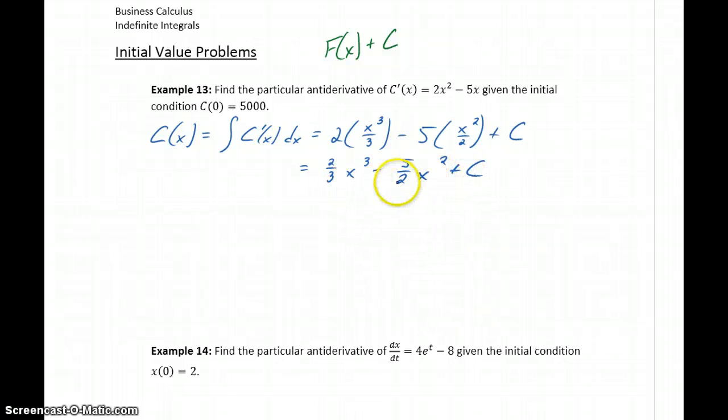So this gives us that infinite family of functions, but we want a particular antiderivative. So the next thing we'll look at doing is using this information we have about this initial condition. We know that c(0) = 5000. So that means evaluating our function c(x) at 0 should give us 5000.